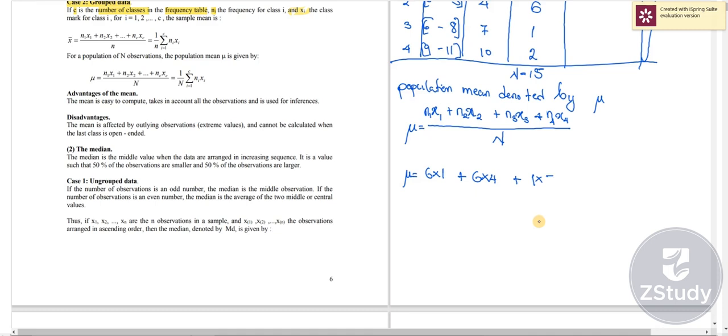1 multiplied by the midpoint 7, plus the fourth frequency is 2 multiplied by the midpoint which is 10. So we have got all these four terms in this equation. All together we're going to divide this by our population